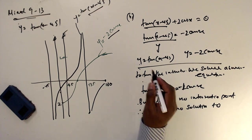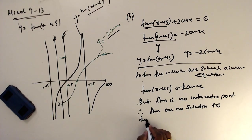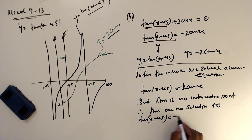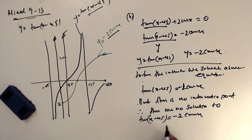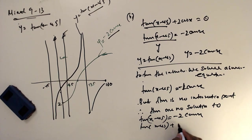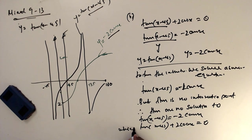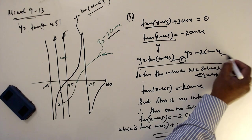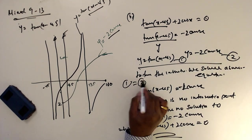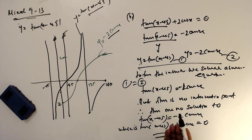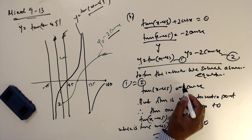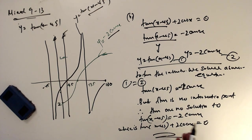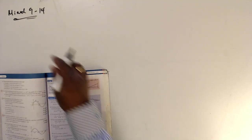So tan(x minus 45) equals minus 2 cos x, which means tan(x minus 45) plus 2 cos x equals 0, has no solutions. You can equate the two expressions - that is one method - but from the graphs there is no intersection point, so there is no solution to this equation.